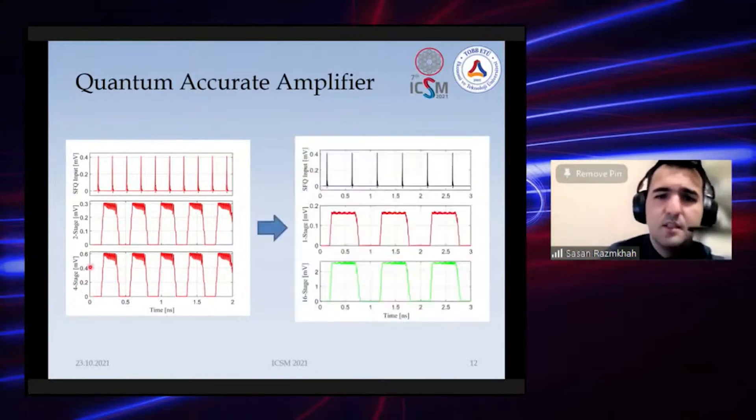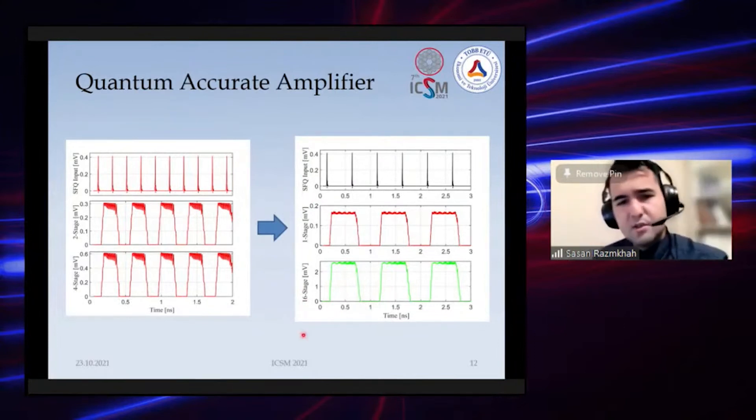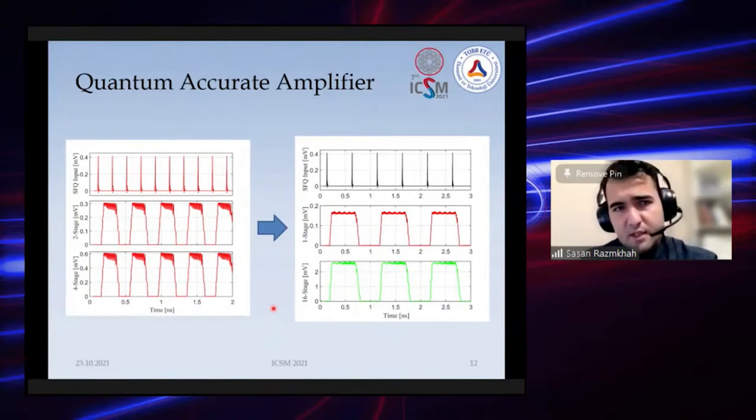As we increase the number of stages we get much more gain—we can get about 2.5 or 3 millivolts with 16 stages. But here's the catch: if you increase your gain and increase the number of amplifiers, you will also lose some bandwidth, so you should consider that for your circuits too.